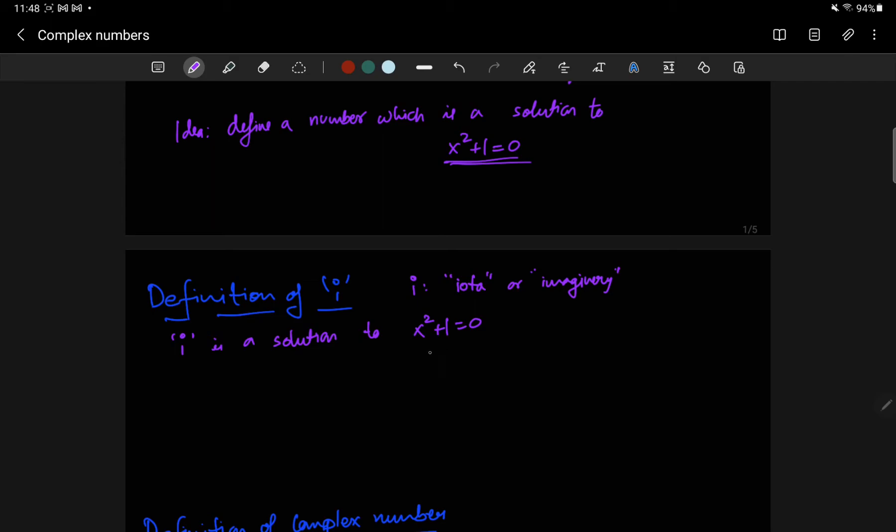So i squared plus 1 is 0, or i squared is negative 1. That's a relation, or i is the square root of negative 1. So what we have done is we have defined the square root of negative 1 to be represented by the symbol i.